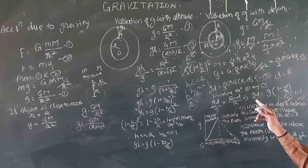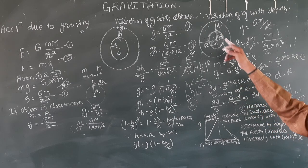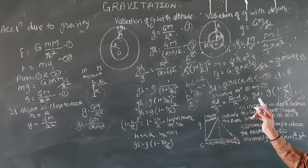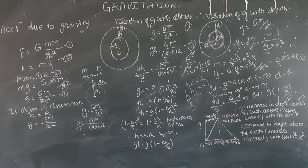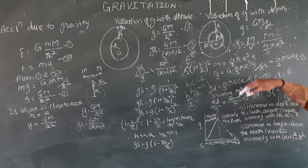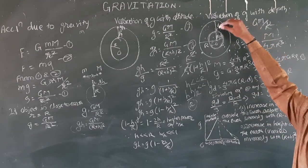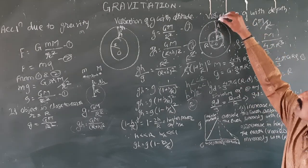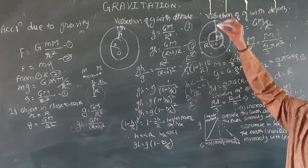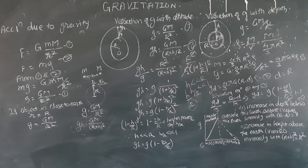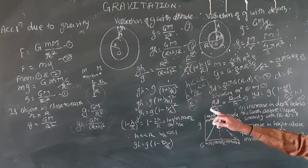The acceleration due to gravity at the center of the earth is equal to zero. It is maximum on the surface of the earth.